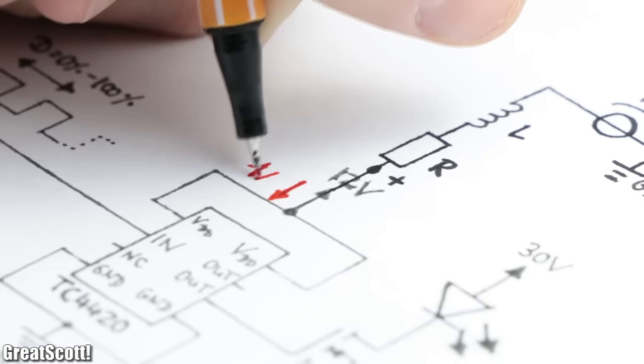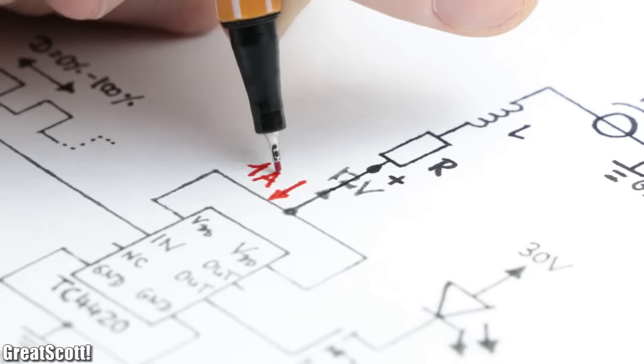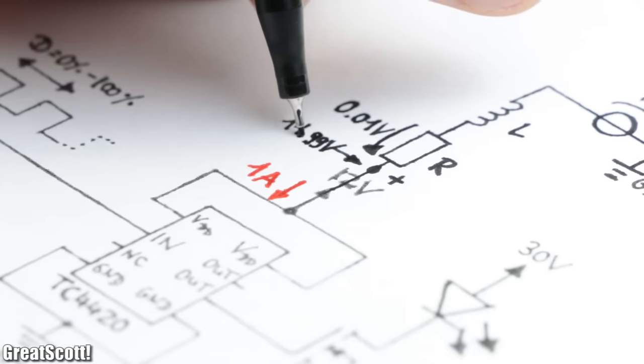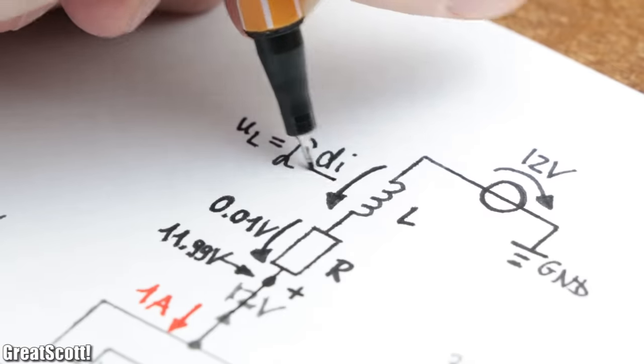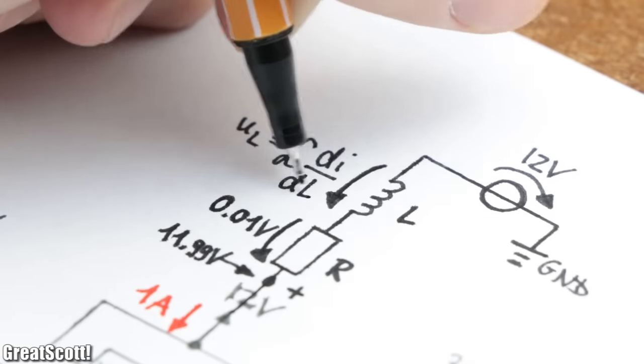Now if the IC would require a constant 1A, we would only get a small voltage drop across the resistor, but no other problems, since an inductor voltage drop only exists with a changing current flow.